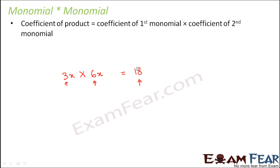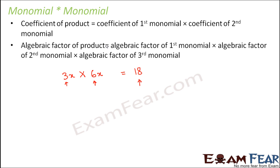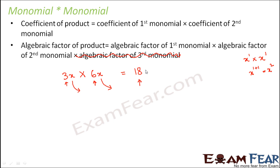We multiply these two coefficients: 3 into 6, which is 18. So 18 becomes the coefficient of the product. Now for the algebraic factor: the algebraic factor of the product equals the algebraic factor of the first monomial multiplied by the algebraic factor of the second. Here both are x, so x into x is x to the power 1 multiplied by x to the power 1. Since the base is the same, the powers get added, giving x to the power 2.